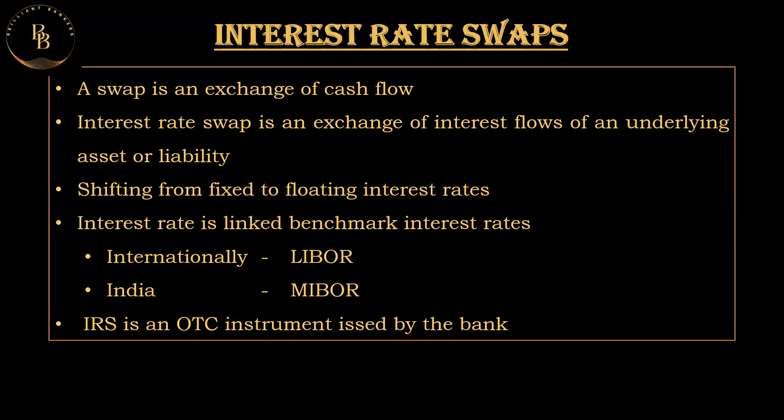One party typically pays a fixed interest rate and the other pays a variable or floating interest rate. The agreement terms include a notional principal — a hypothetical amount on which the interest rate swap is based. It is not exchanged but used only to calculate the interest payments. The fixed rate is the agreed-upon fixed interest rate one party pays. The variable rate is tied to a benchmark interest rate like LIBOR internationally, or MIBOR — the Mumbai Interbank Offered Rate — in India.